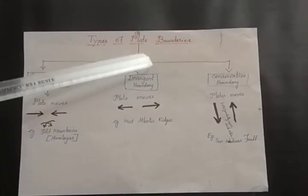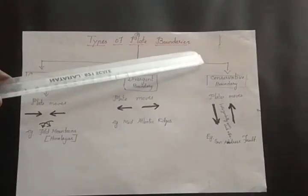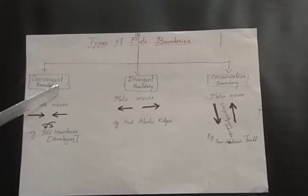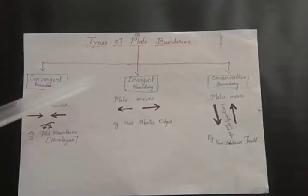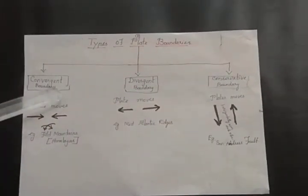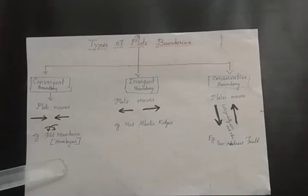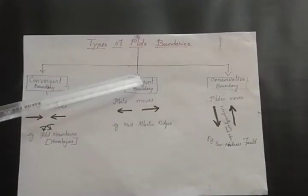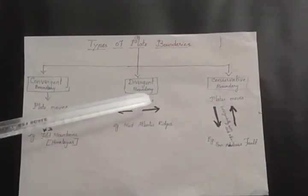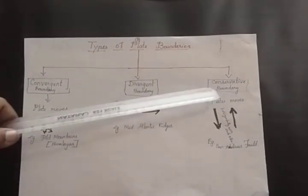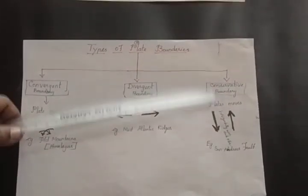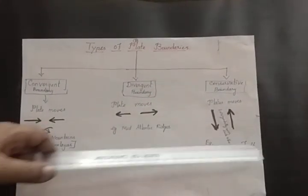The three types of plate boundaries are convergent boundary, divergent boundary, and conservative boundary. The best example for convergent boundary is the Himalayas, for divergent boundary is the Mid-Atlantic Ridge, and for conservative boundary is the San Andreas Fault.